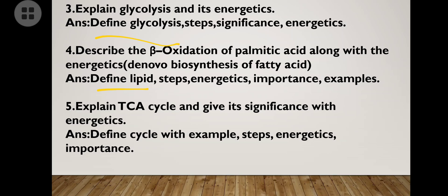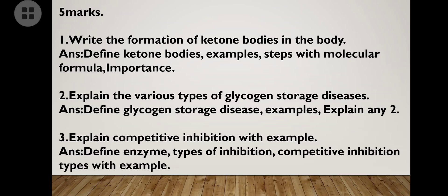Then the TCA cycle and its significance. Define TCA — it is also called the citric acid cycle or Krebs cycle. Write the steps, energetics, and importance, and where this cycle takes place — in the respiratory system, urinary system, and so on. Now let's move to the five-mark important questions of biochemistry.